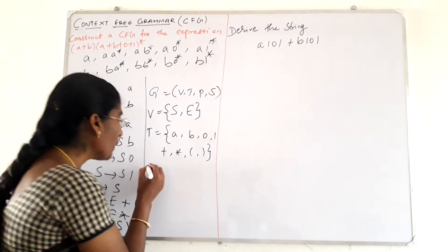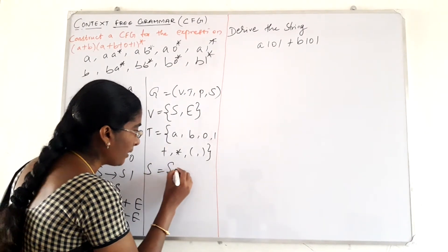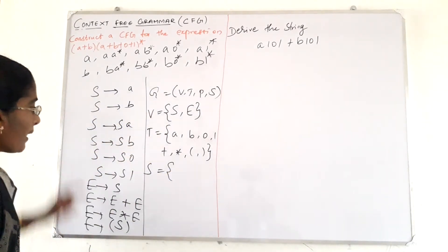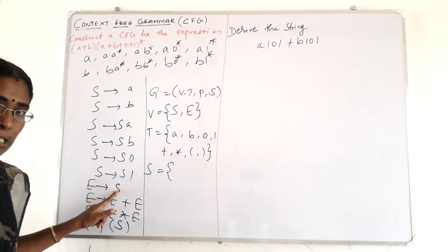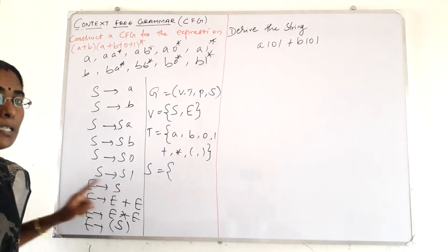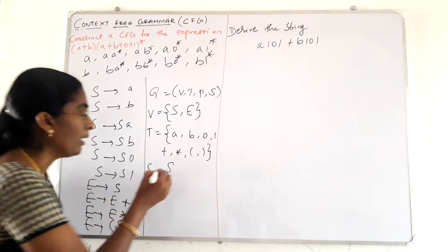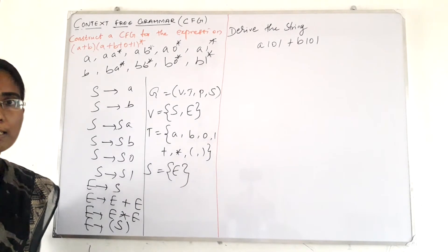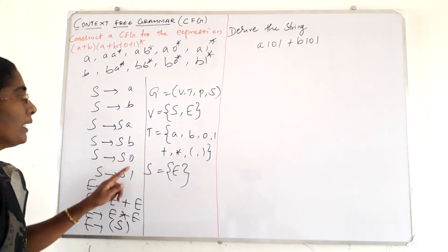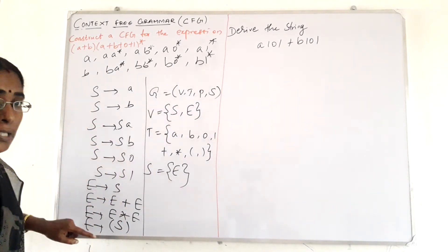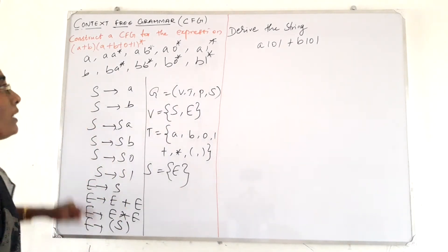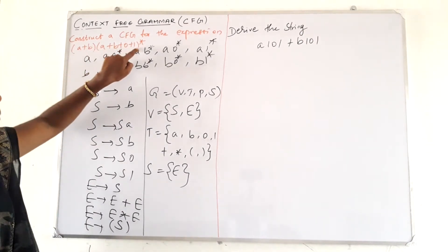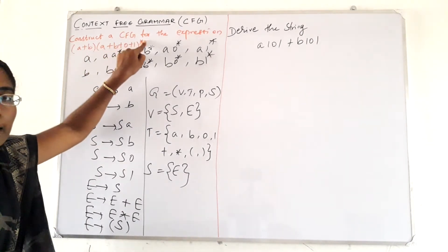The terminals are A, B, 0, 1, and the operators are also considered terminals: plus, star, open bracket, and close bracket. The start symbol is E, since E implies S is the first production. This completes the CFG for the expression A plus (B plus 0 plus 1) star.